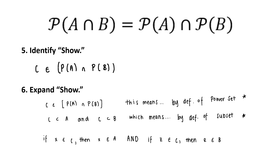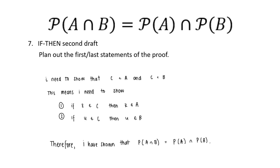Step five was to identify my 'show,' which is: C exists within the power set of A intersect the power set of B. Step six, I expanded my 'show' through the definition of power set and the definition of subset, which resulted in: if X exists in C, then X exists in A; and if Z exists in C, then Z exists in B — in which case C is a subset of A and B, or an element of the power set of A intersect the power set of B, and X and Z are elements of subset C. Finally, I wrote out my second draft of my if-then statement, which helped me plan out the first and last statements of my proof.